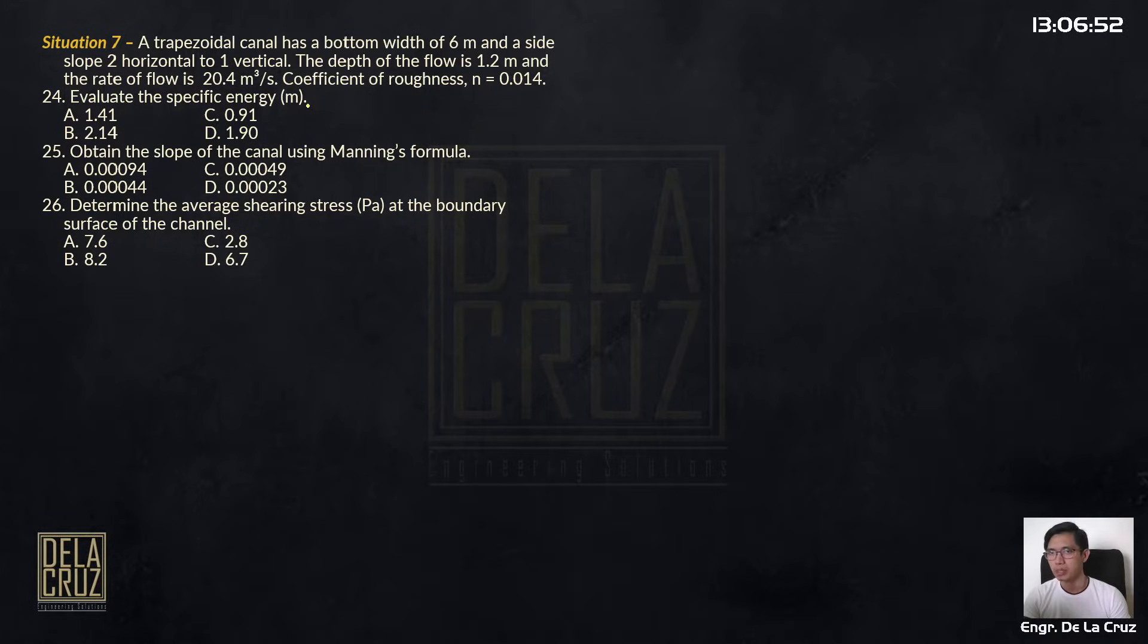So evaluate the specific energy, obtain the slope of the canal using Manning's formula, and determine the average shearing stress in Pascal at the boundary surface of the channel.